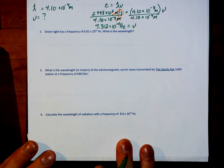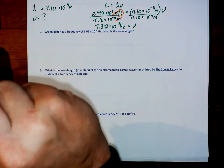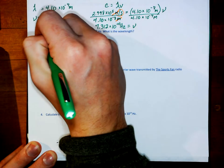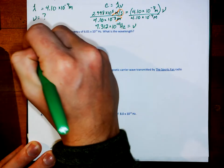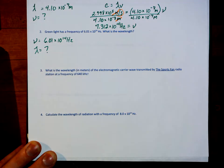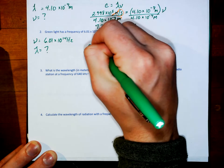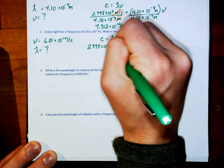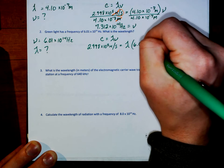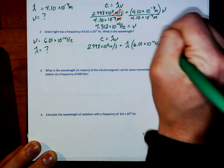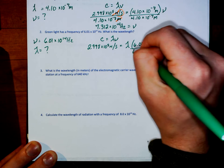Number 2: green light has a frequency of 6.01 times 10 to the 14th hertz. What is the wavelength? Given my frequency of 6.01 times 10 to the 14th hertz, wavelength is what I'm looking for. So I need an equation that relates those two variables — again, it is C equals lambda nu. My C is 2.998 times 10 to the 8th meters per second. My wavelength is what I am trying to determine, and my frequency is 6.01 times 10 to the 14th hertz. To solve for that, I am going to divide by 6.01 times 10 to the 14th hertz on each side.